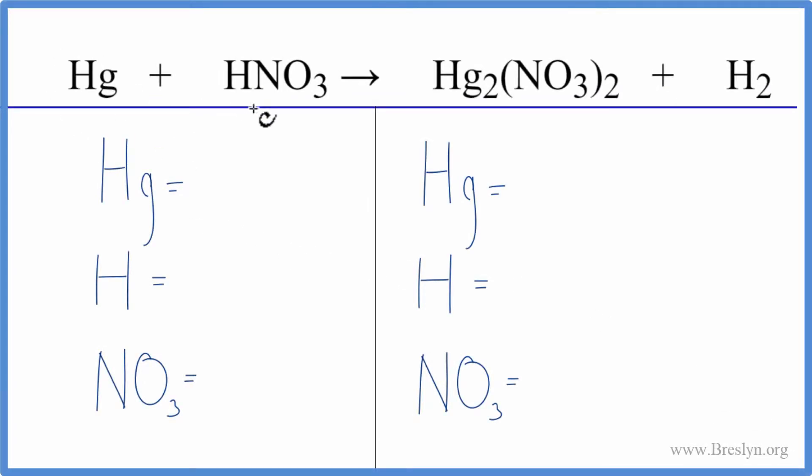To balance this equation, mercury plus nitric acid, let's count the atoms up on each side.